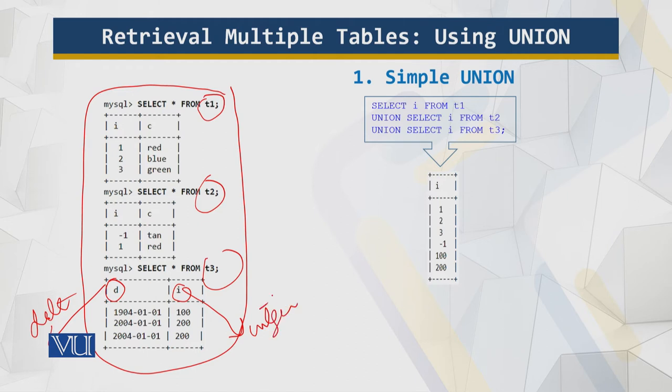To write a UNION statement that combines multiple retrievals, just write several SELECT statements and put the keyword UNION between them. For example, to select the integer column from each table, we have UNION here and then UNION here. This is the answer. This is fairly simple. Let's look at more complicated examples with names and data types.